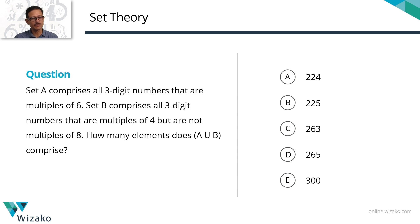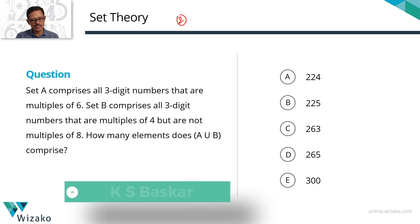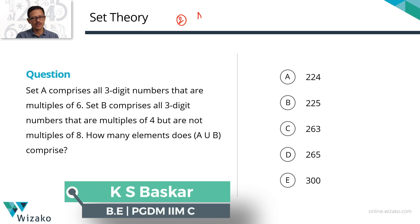This is a medium difficulty GRE practice question — a quant problem-solving question from set theory. The core concept is set theory, but this question also includes a healthy dose of two other chapters: arithmetic progression and a little bit of number properties thrown in.